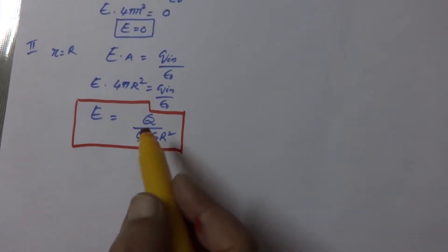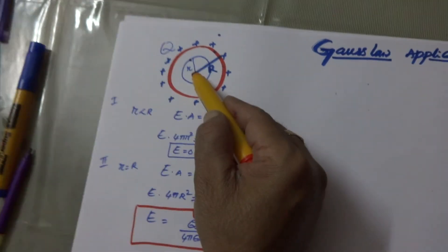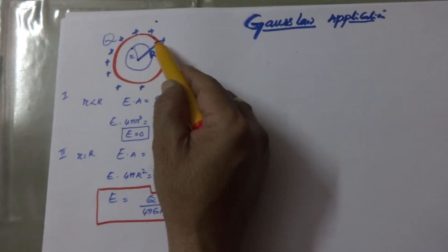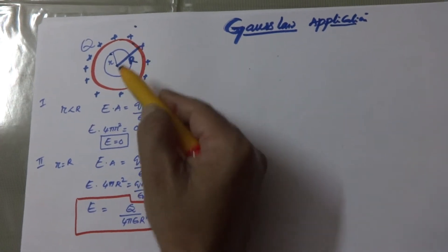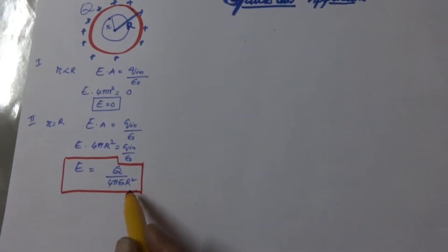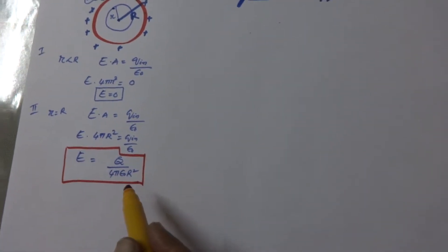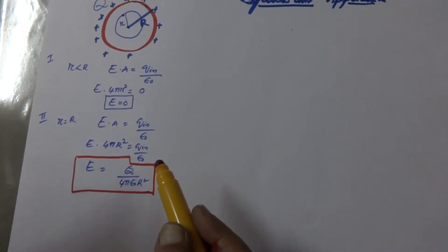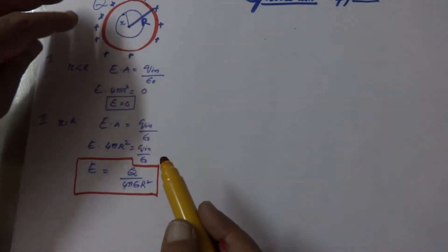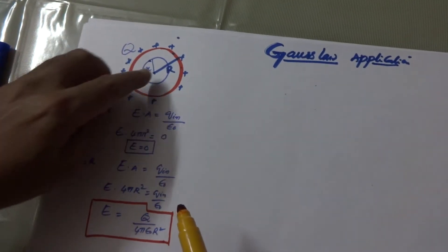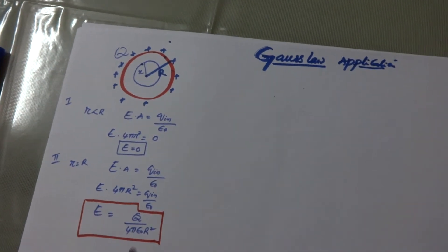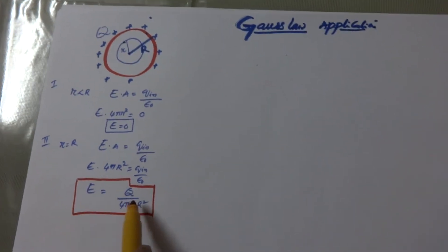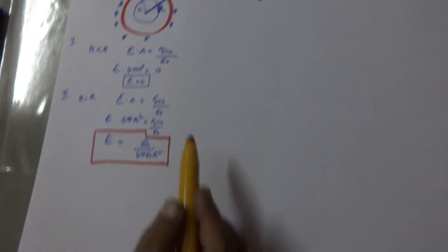This result is also very interesting. Suppose if you imagine the total charge Q is a point charge placed at the center, then what is the electric field at point R? It is also equal to Q by 4πε₀R². That means you can very well imagine as if the total charge is placed at the center, and the electric field established is also the same.